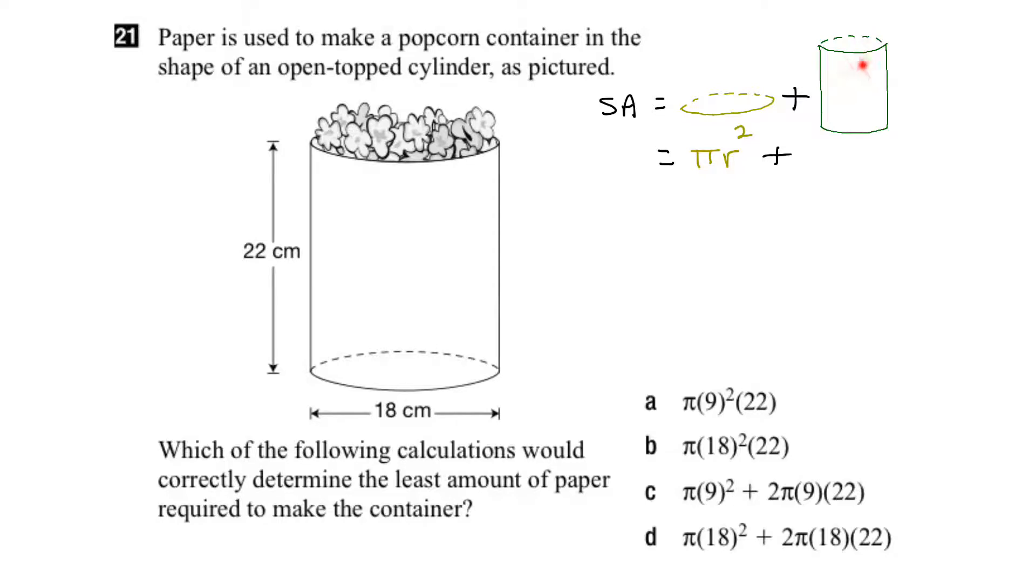But what about the side part of our cylinder here? How do we figure that area out? Let's imagine that we cut, take some scissors, and we cut this part of the cylinder right along that line there. And if we started to unfold the shape, we'd get something that looks like this. And if we kept going, we'd eventually end up with a rectangle.